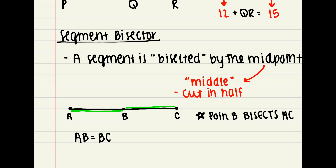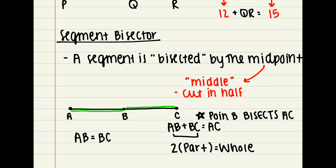We still have the Segment Addition Postulate: AB plus BC equals AC. But since it's bisected, both parts are the same, so another way we can write it is two times the part equals the whole. If you can remember: for a regular Segment Addition Postulate it's part plus part equals whole, and for a bisected one it's two times the part equals the whole — it will make your life a whole lot easier.